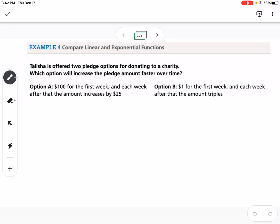Our last example is comparing linear and exponential functions. So it says Talisha is offered two pledge options for donating to a charity. Which option will increase the pledge amount faster over time? So it says option A is $100 for the first week, and each week after that, the amount increases by $25. So if we said week and money, so to start out with, it's $100, and then it's increasing by $25. So after week one, it'd be $125. Week two, it'd be $150. Week three, it'd be $175. After four weeks, it'd be $200. Five weeks, $225. We could write an equation for this. So this is linear. You notice we're increasing by 25 each time. So this would be y = 25x + 100.